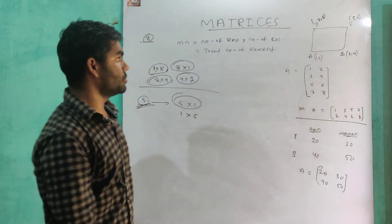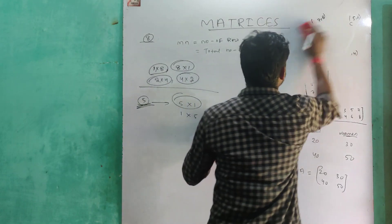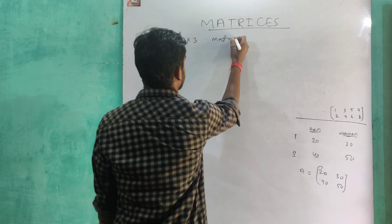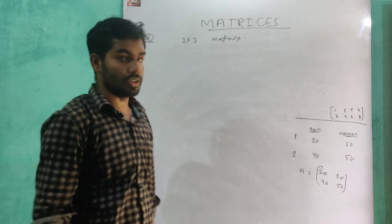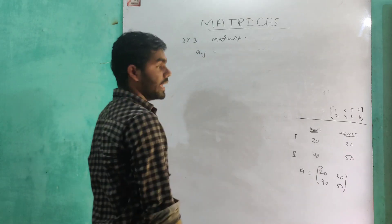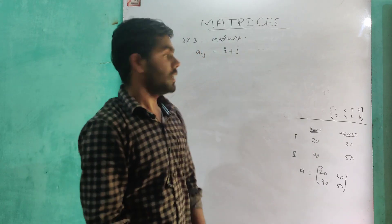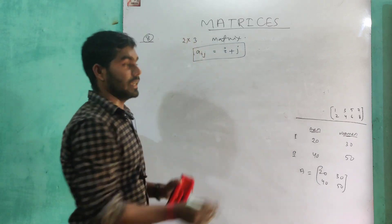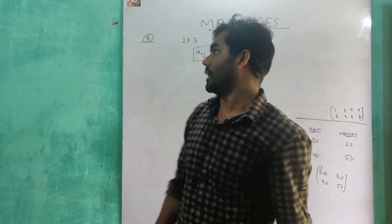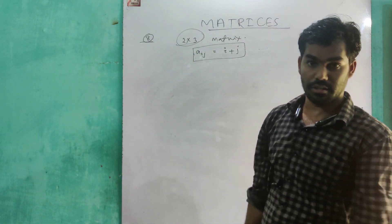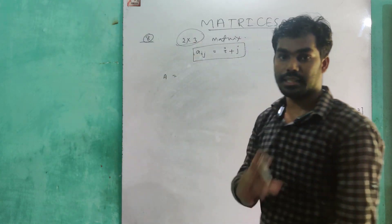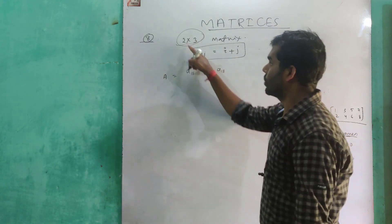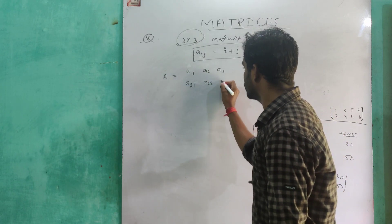Now, suppose we need to construct a 2 by 3 matrix whose element aij equals to i plus j. Here i represents the row and j represents the column. For a 2 by 3 matrix, we have 2 rows and 3 columns. The general representation gives us: A11, A12, A13 in row 1, and A21, A22, A23 in row 2.